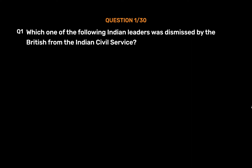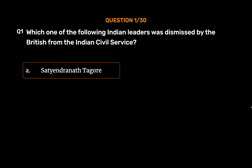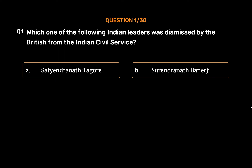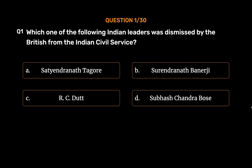Question No. 1. Which one of the following Indian leaders was dismissed by the British from the Indian Civil Service? Option A: Satyendra Nath Tagore. Option B: Surendranath Banarji. Option C: R.C. Dutt. Option D: Subhash Chandra Bose. The correct answer is Option B: Surendranath Banarji.